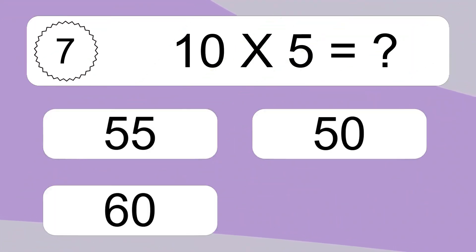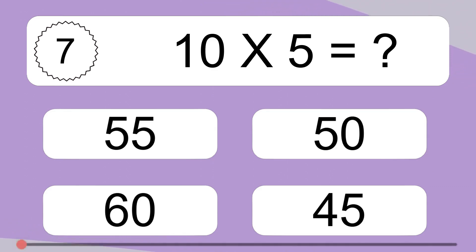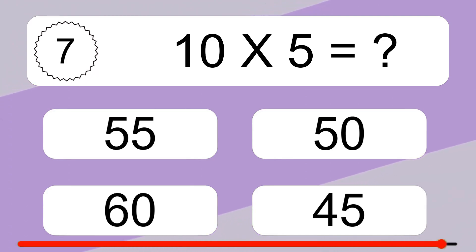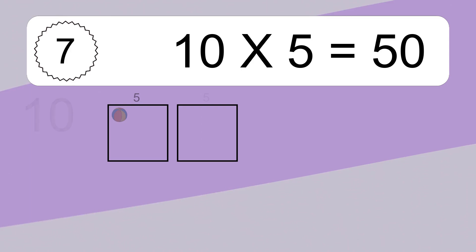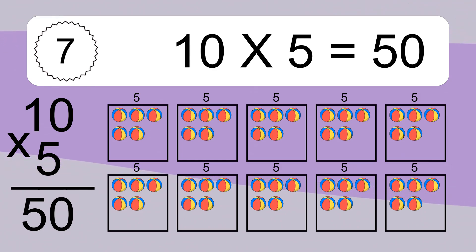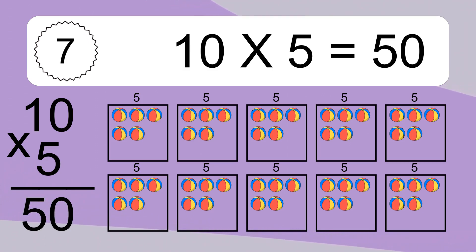Ten times five equals what? Ten times five equals fifty. We have ten boxes, and each box has five colorful balls inside. If you count all the balls in all the boxes together, you will have ten times five balls. This equals fifty balls.